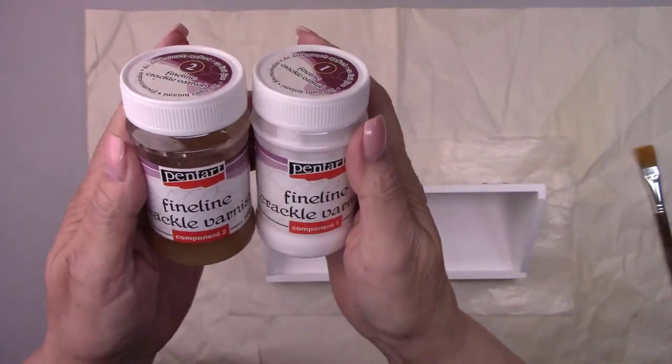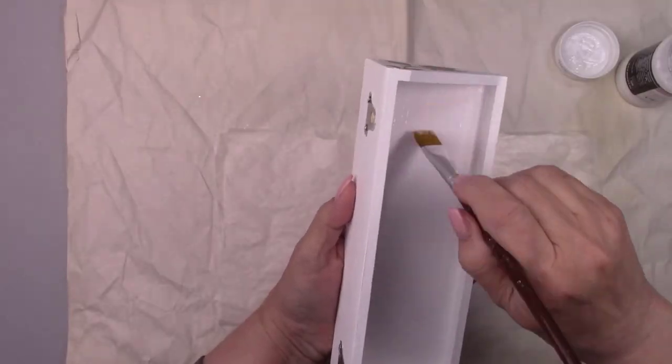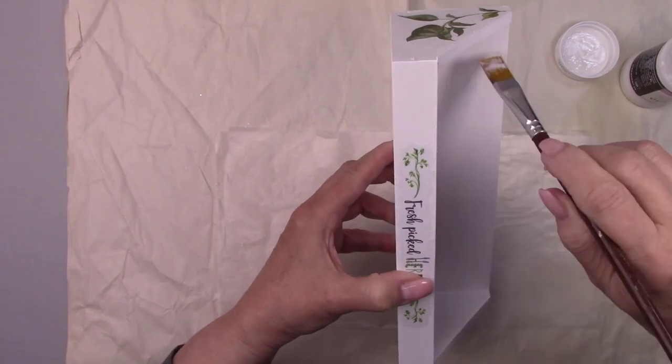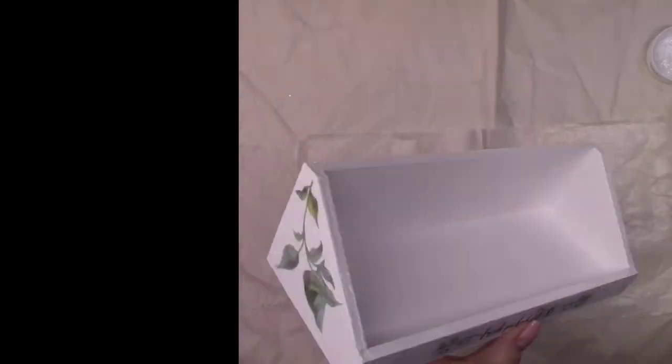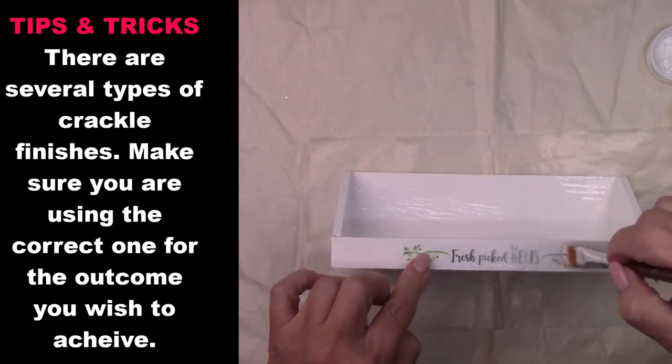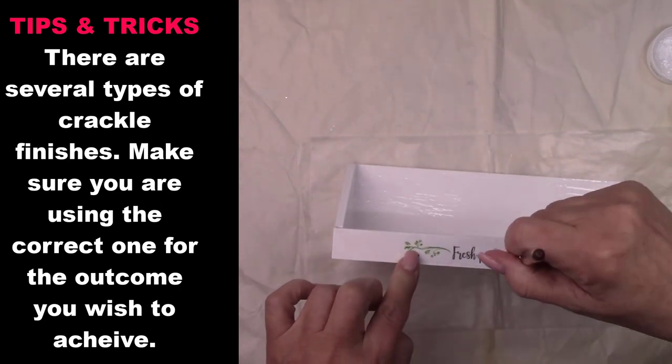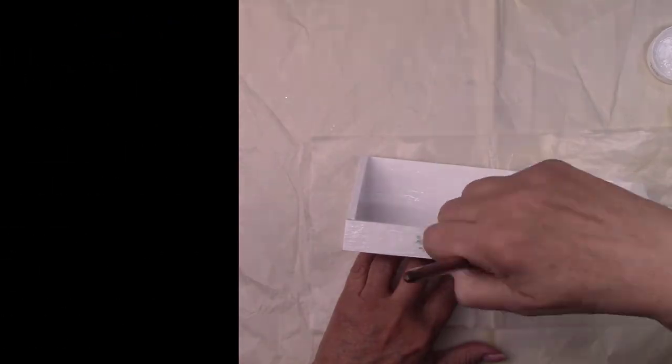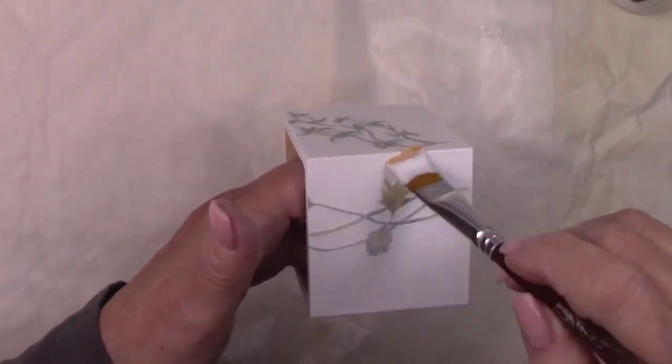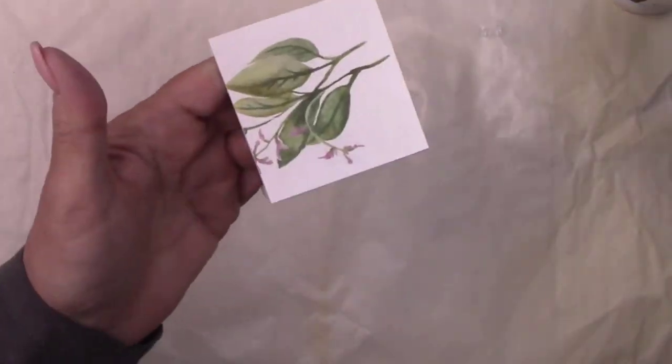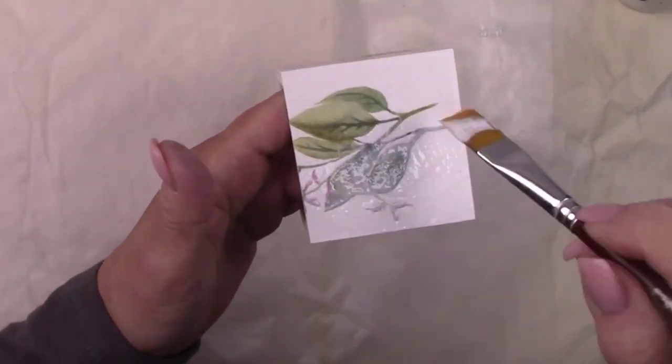I'm going to add a crackle finish using Pentart's 2-step fine line crackle finish. I use this one a lot as well. I'm applying component number 1 right now. It goes on white but dries clear and it takes about an hour or so.